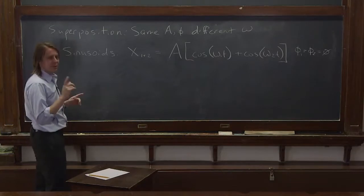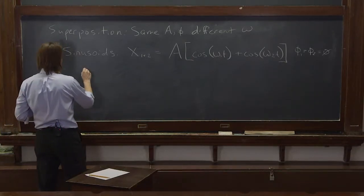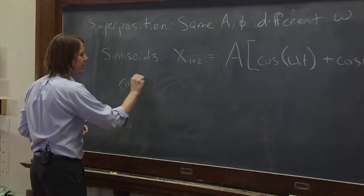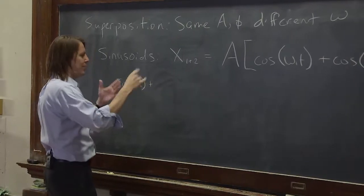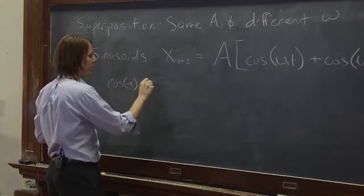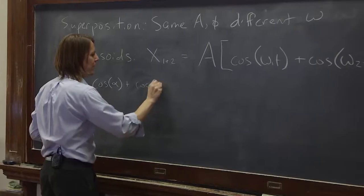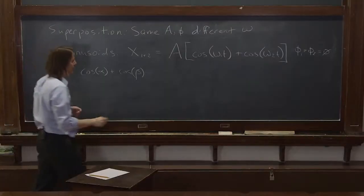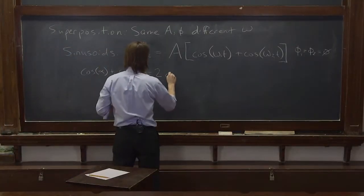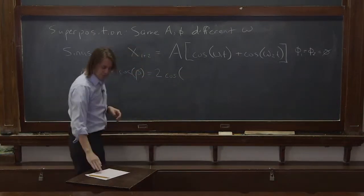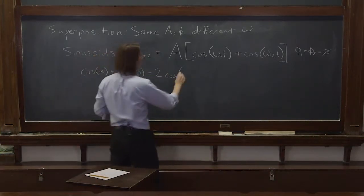So what we need is an identity, a very important identity that will come up a lot in physics, the sum to product identity. The cosine of one number plus the cosine of another number, we'll just call them alpha and beta, is equal to 2 times the cosine of the sum of them over 2.